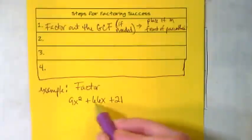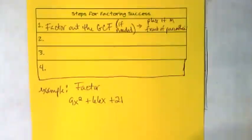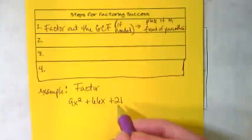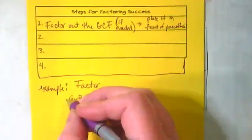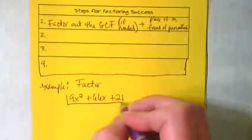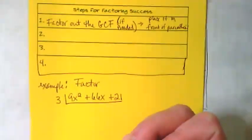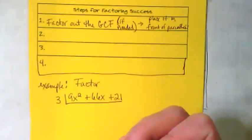Let's use this example to talk about what that step means. When I look at 9, 66, and 21, I see a common factor. What number could be divided out of 9, 66, and 21? 3 is the GCF here, so I'm going to divide this by 3, and I'm going to rewrite the trinomial underneath it with that 3 divided out.